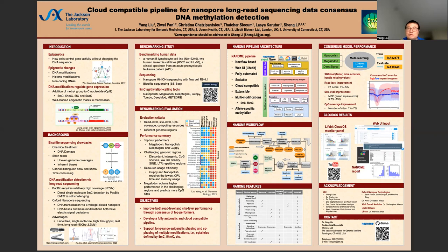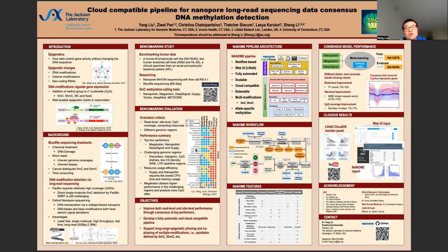Nanopore sequencing expands the capacity of long-range and single-base, single-molecule DNA methylation detection. Previously, we benchmarked and ranked seven computational tools for DNA methylation detection. The methylation detection in regions of discordant non-singleton DNA methylation patterns, intergenic regions, low-coverage density regions, and repetitive regions exhibited low performance using nanopore sequencing.